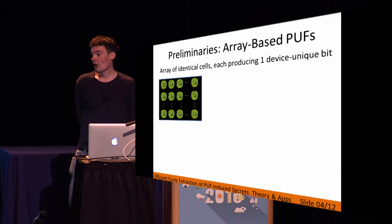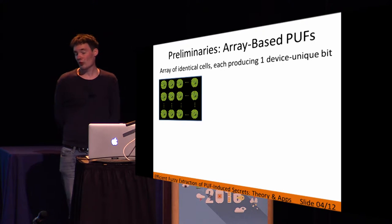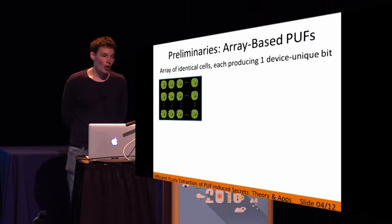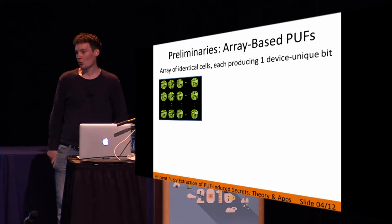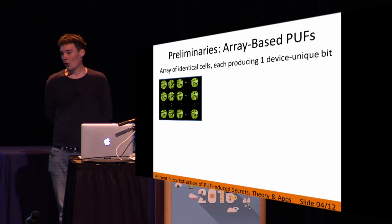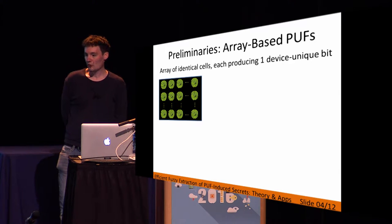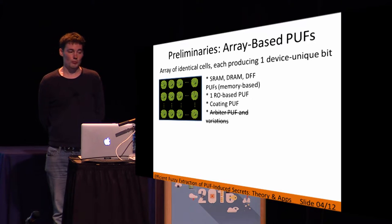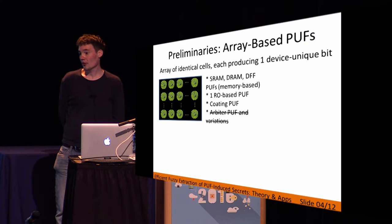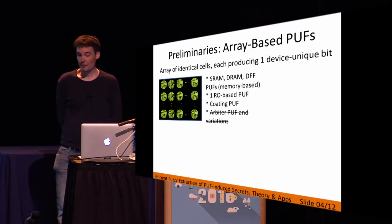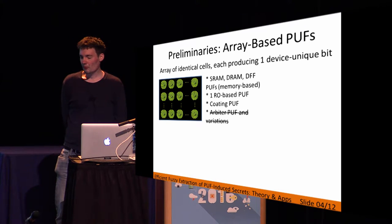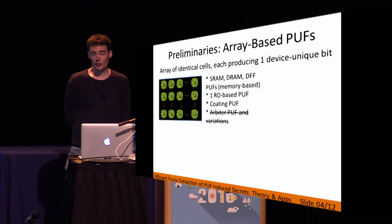This work applies to array-based PUFs, which can be informally referred to as copy-paste PUFs. We have an array of identical cells, each cell producing exactly one bit. To design such a PUF, you just design one cell and copy-paste it in your layout. Examples of PUF architectures that comply with this array-based structure are memory-based PUFs — for instance, the SRAM PUF, the DRAM PUF, the D-flip-flop PUF, a ring-oscillator-based design, and the Kotlin PUF. Not included are arbitrary PUFs and variations.